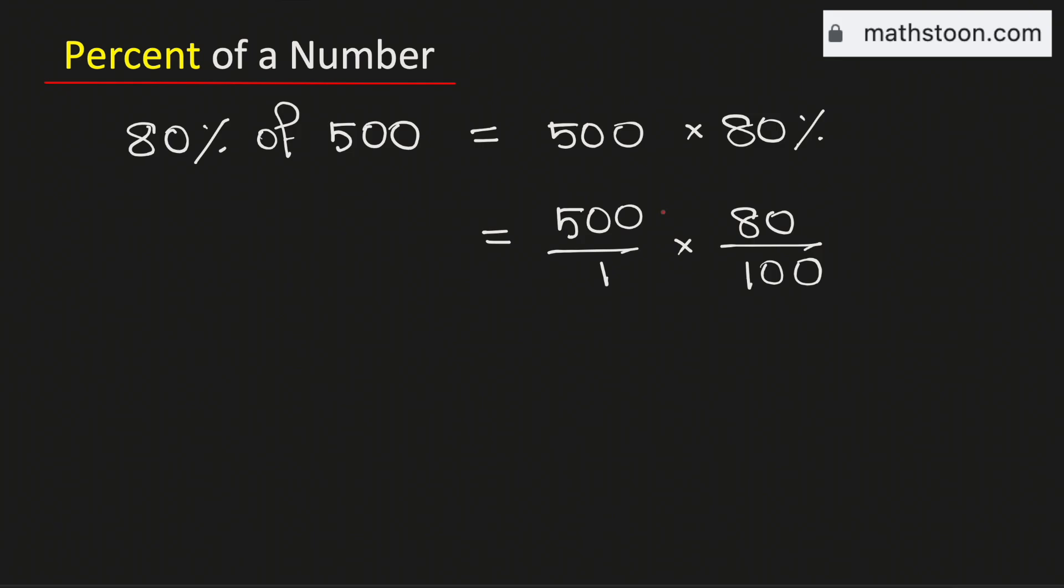Now we will cancel the common zeros. Therefore, we are just left with 5 times 80 in the numerator and 1 times 1 in the denominator.